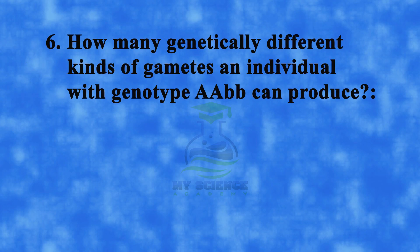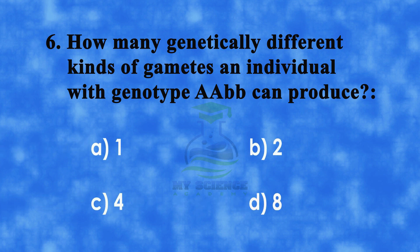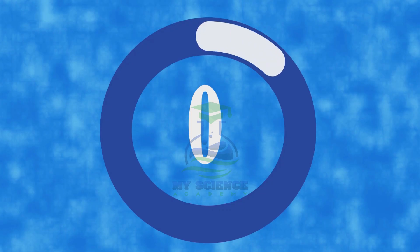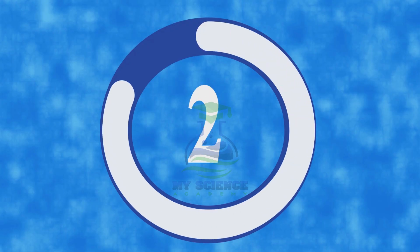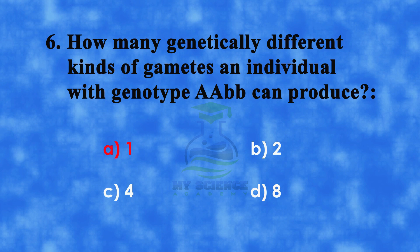Question 6: How many genetically different kinds of gametes can an individual with genotype AABB produce? A. 1, B. 2, C. 4, or D. 8. Correct answer is A. 1.